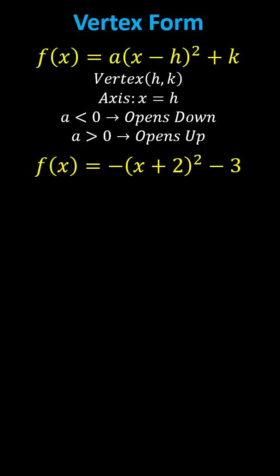Vertex form of a quadratic function is f of x equals a times the square of x minus h plus k.